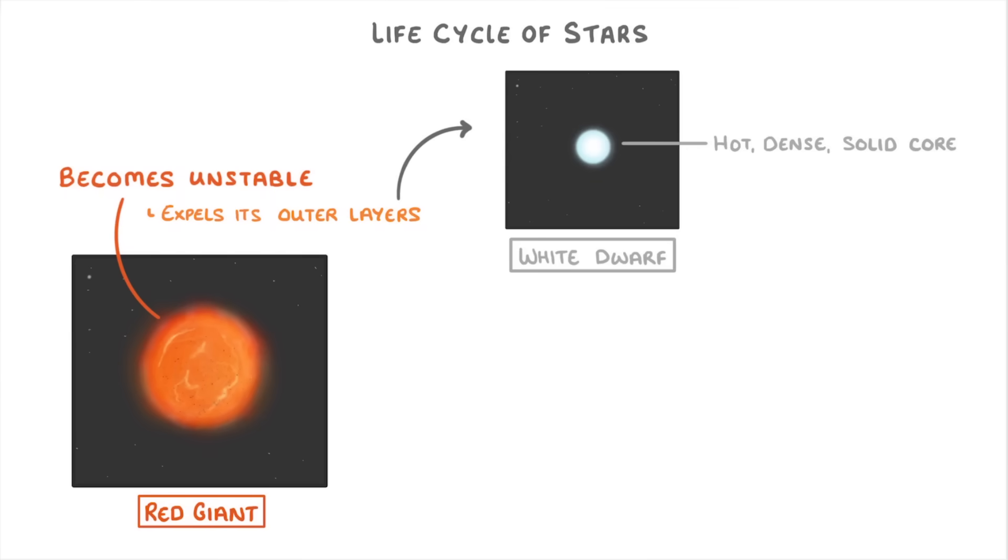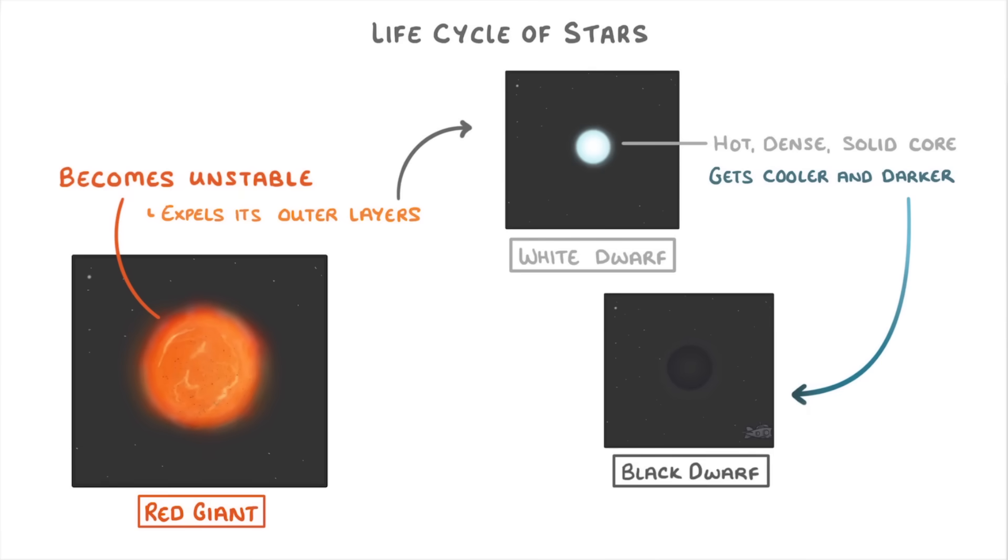Over time, the white dwarf gets cooler and darker as it emits all of its energy. Until, finally, it transitions to a black dwarf, because it no longer has enough energy to emit light, and so appears dark.